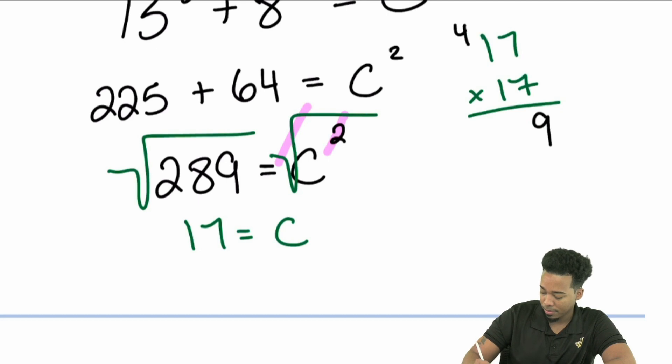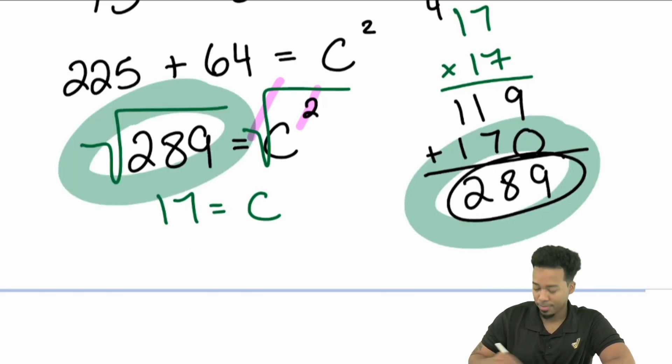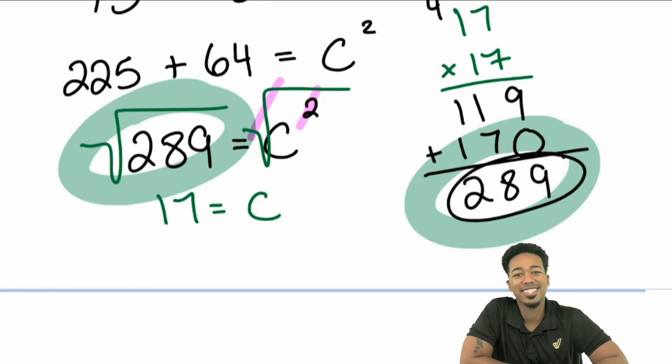And just to prove the point, let me prove it to you by doing 17 times 17. Let me show you that this is actually pretty straightforward. Seven times seven, 49. One times seven is seven, carry the four is 11. Bring the zero down. Seven times one is seven. One times one is one. Nine plus zero, that's nine, eight, and two. Look at that. We've proved it right.